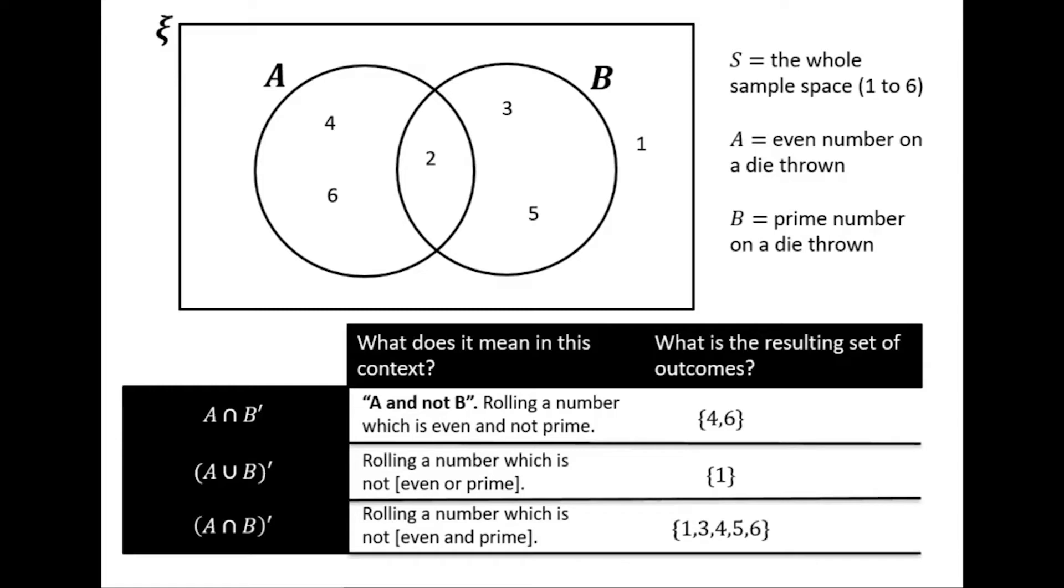For the next section of the video I'm going to show a Venn diagram with various shaded regions. Pause the video each time a new shaded region comes up and see if you can interpret in set notation the region that's been shaded. They're going to come fast, so be sure to pause the video for each new shaded area and have a good think about what the set notation for that shaded area should be. Some of them do have multiple correct answers.